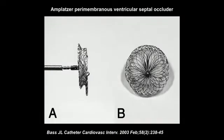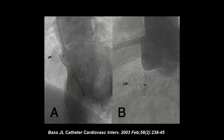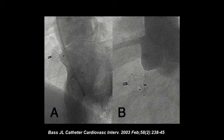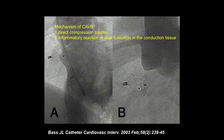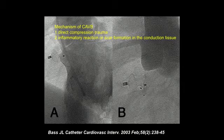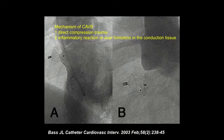This is the Amplus PMVSD occluder. It has two discs. The left ventricular disc has no superior rim; instead it has a long inferior rim. This is the right ventricular disc, so the shape is asymmetric. When implanted, this is the LV disc and the RV disc. The His bundle is approximately here. The mechanism of AV block is, first, direct compression — this is a nitinol memory alloy, and as time passes the RV disc and LV disc squeeze — so AV block can occur. The other mechanism is inflammatory reaction or scar formation in the conduction tissue, in which case steroid may work well.